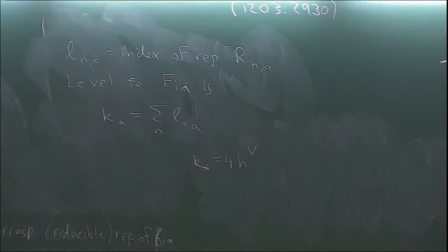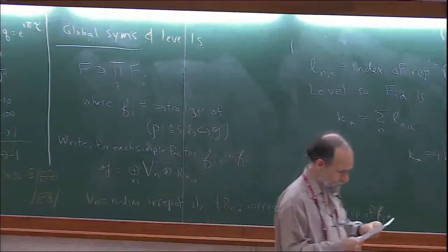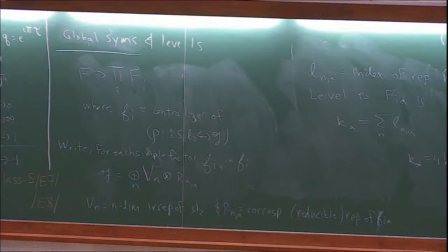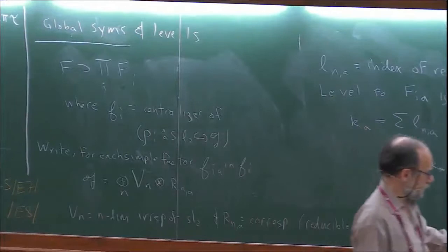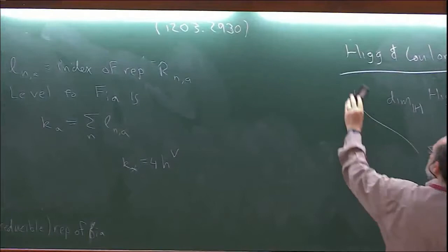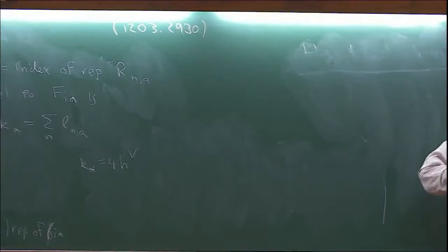Unfortunately, the full global symmetry is some enhancement of the manifest one, which just comes from the global symmetries associated to each of the punctures. So far I've told you a pitifully small amount of information about some complicated quantum field theory. What I'd like to do is tell you how you compute this enhancement when it happens, and also gain a lot more information about the quantum field theory. The tool for doing that is called the superconformal index.